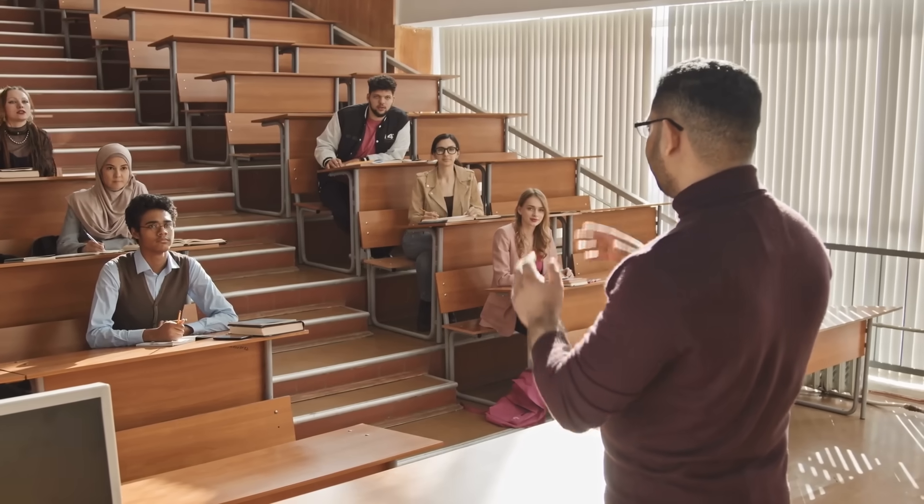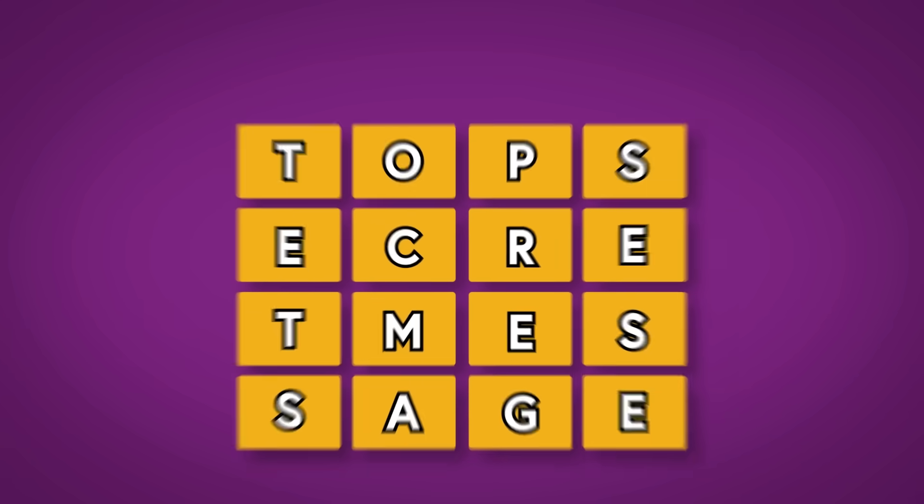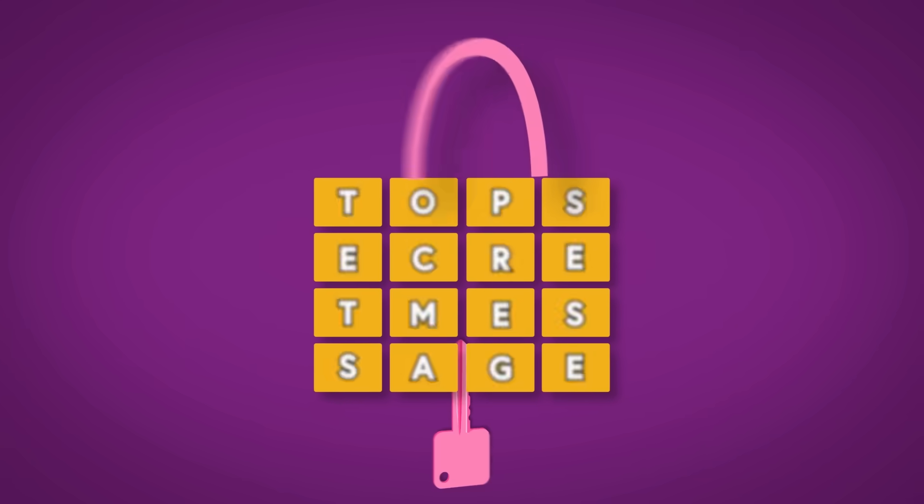This next step in the encryption process is the most important. If you're going to try and fail to impress a woman at a bar by explaining the NSA's standard of encryption, this is the part you've got to get right. We're going to take the block and add our key to it. This key is basically the password that lets us encrypt and decrypt the text.